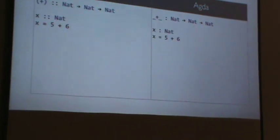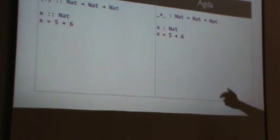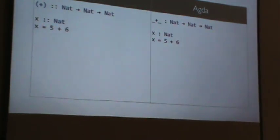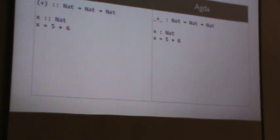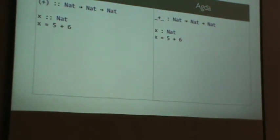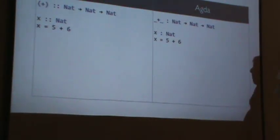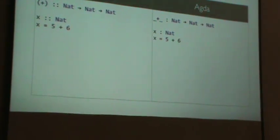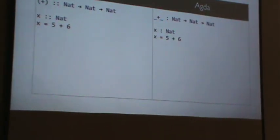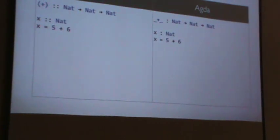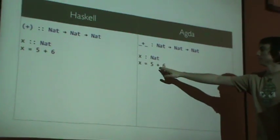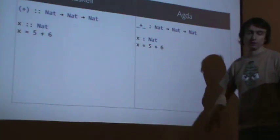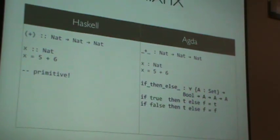So it also has this other really neat feature called mixfix. And so in Haskell you define an infix operator with sort of any punctuation character in Unicode. So plus is an infix operator there, you can use it infix. In Agda, instead you actually mark that it's going to be infix by putting these underscores around it. And anything with an underscore around it can be used infix, or mixfix, as I will show you soon.